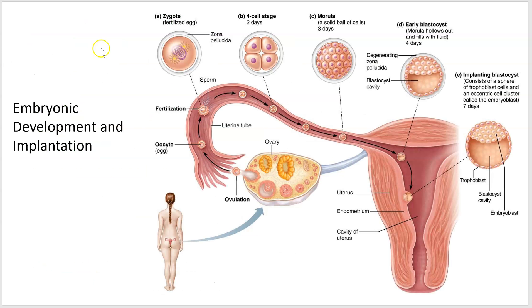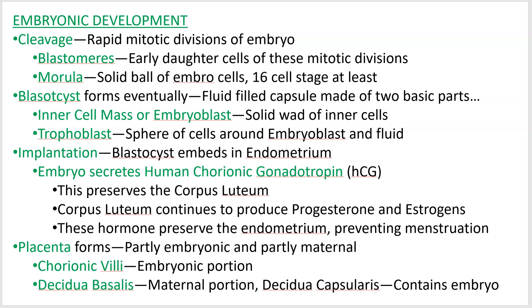Here on the slide we see them divided once — two cells, then four cells, and so on. Each of these cells is called a blastomere. The solid ball of cells, once it becomes a solid ball, is called a morula at that embryo stage.